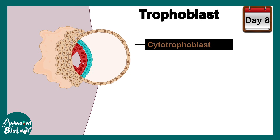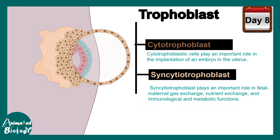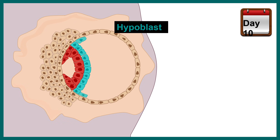The trophoblast, the outer layer, further divides into the cytotrophoblast and the syncytiotrophoblast. The cytotrophoblast helps the blastocyst get embedded into the endometrium, and the syncytiotrophoblast plays an important role in fetal and maternal exchange — this is basically the future placenta.